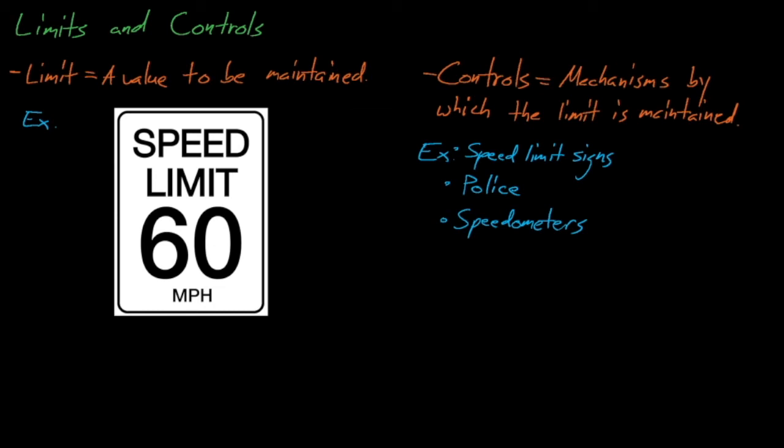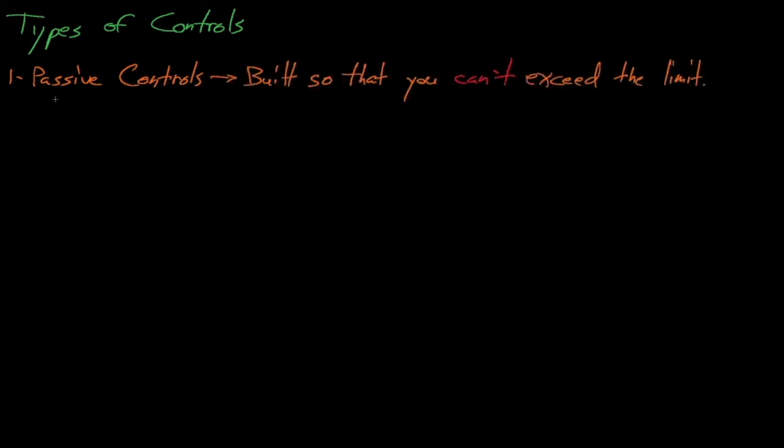We'll discuss how to control various parameters in fissile solutions and how to enforce certain safety limits. But first, let's review the three general classes of controls. These three classes of controls include passive, active, and administrative controls.